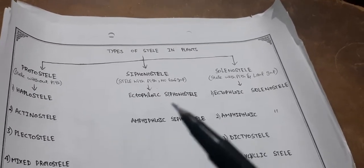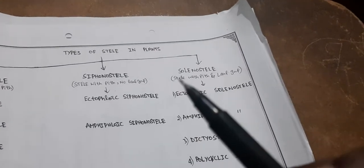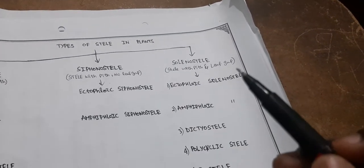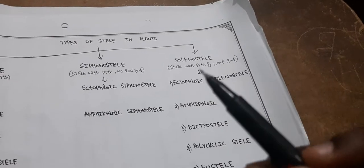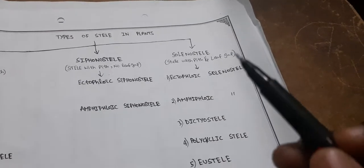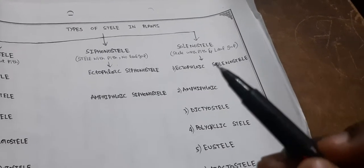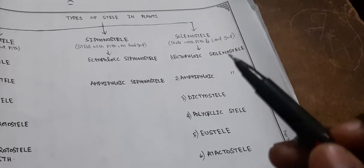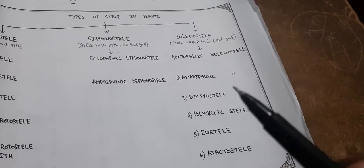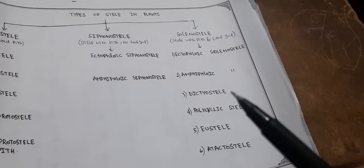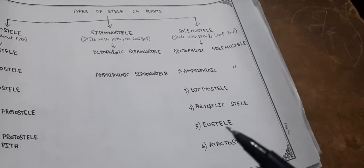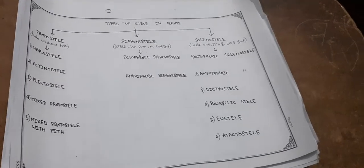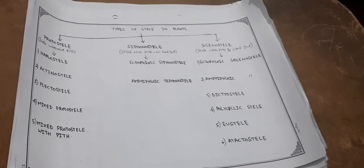Next, solenostele — a stele with pith and leaf gaps, meaning both pith and leaf gaps are present. There are six types: ectophloic solenostele, amphiphloic solenostele, dictyostele, polycyclic stele, eustele, and atactostele.